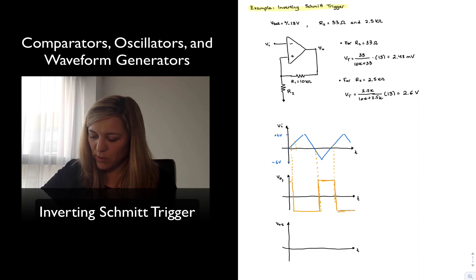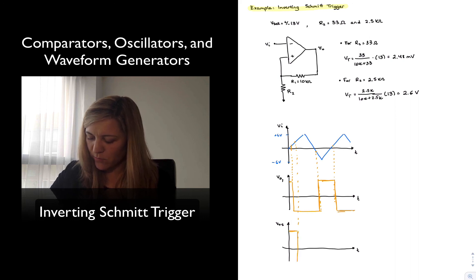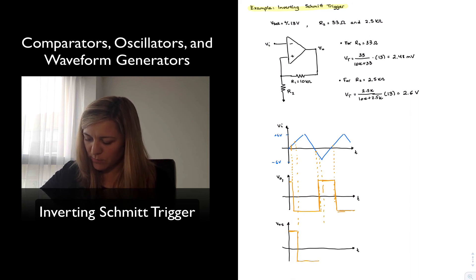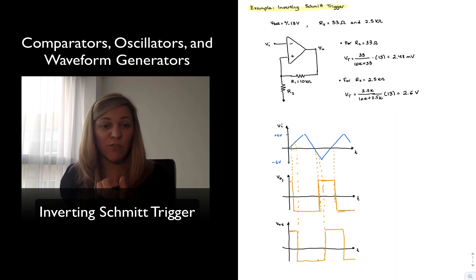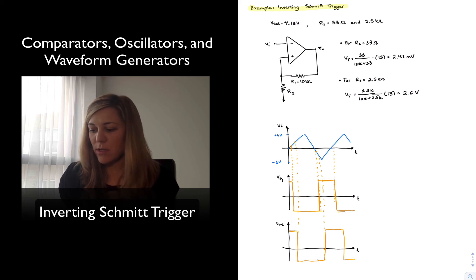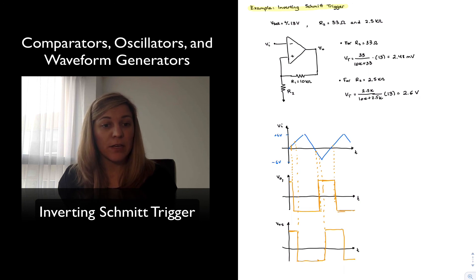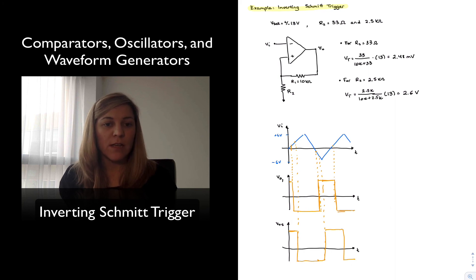In the second case, the output transitions from high to low at +2.6 V and from low to high at −2.6 V. The result is a shifted version of the output compared to the first case. Notice that in this particular configuration, the hysteresis — the transition points — is symmetrical with respect to zero volts, giving plus and minus symmetrical values, even though we can control how wide that hysteresis is by selecting R1 and R2.